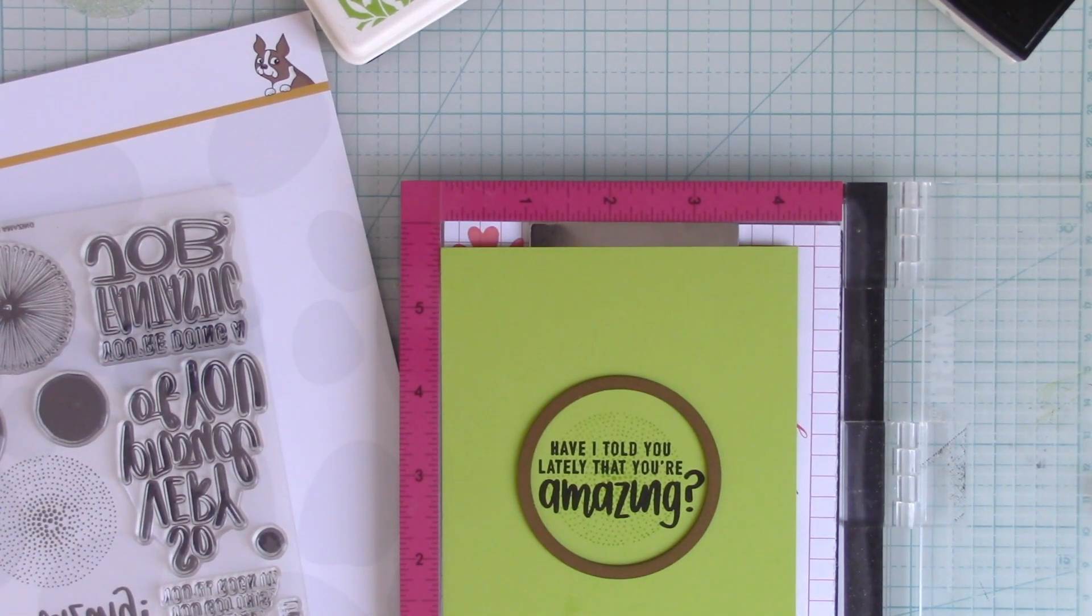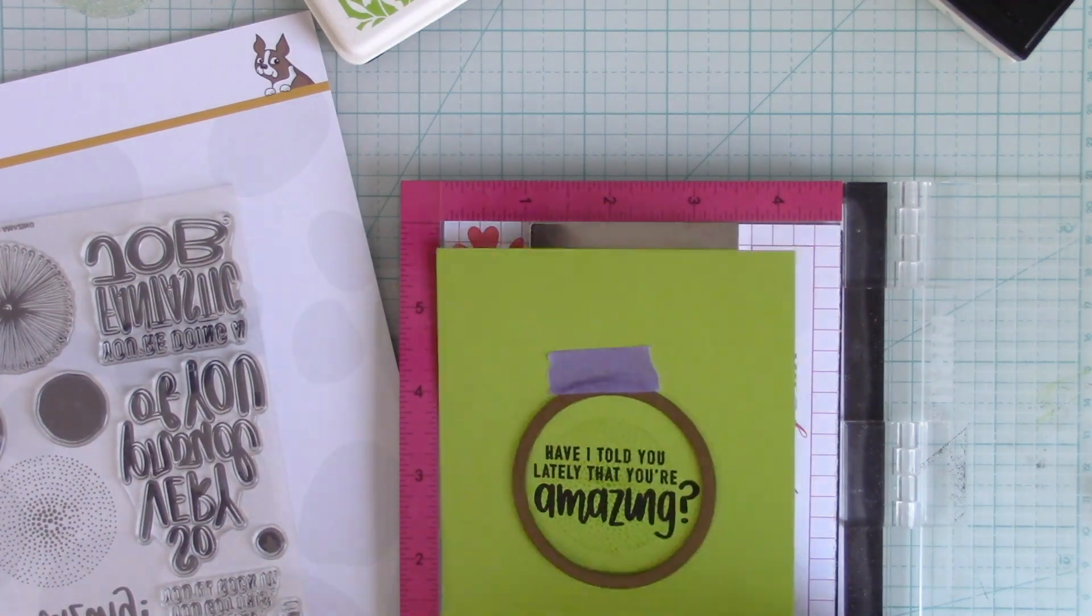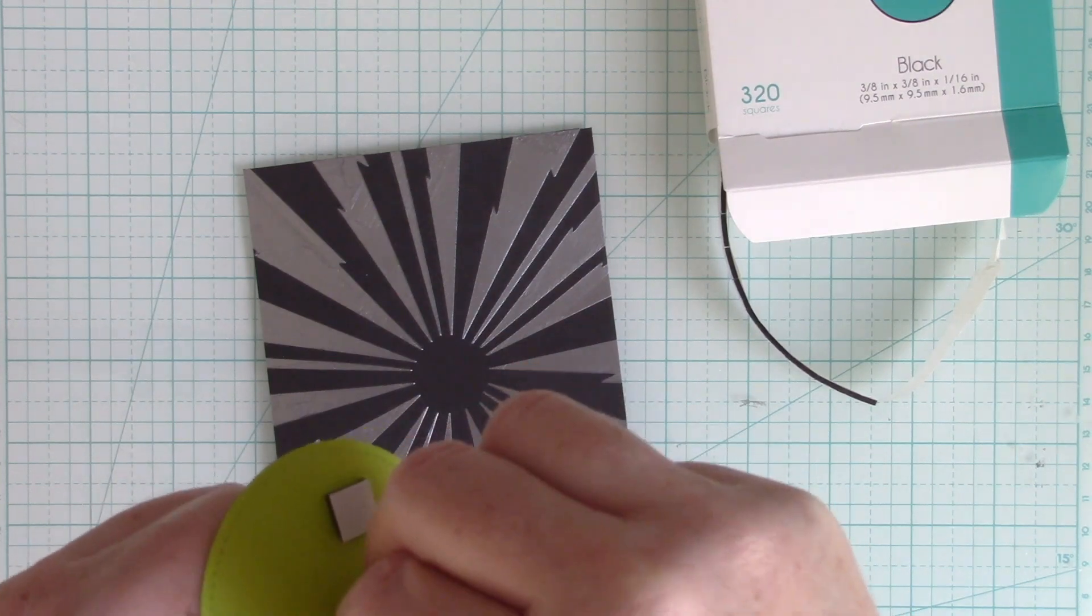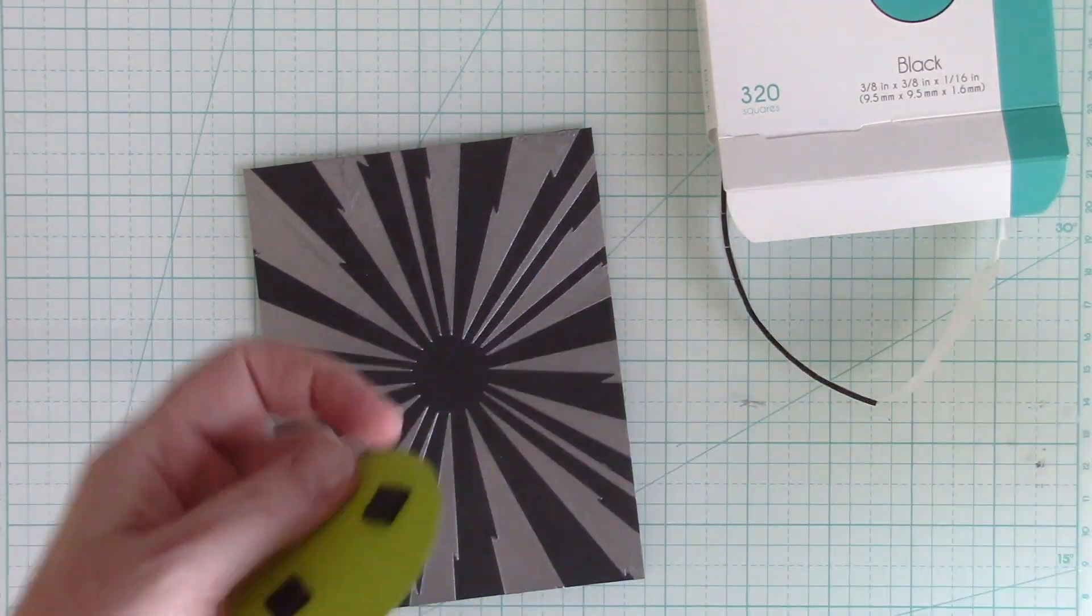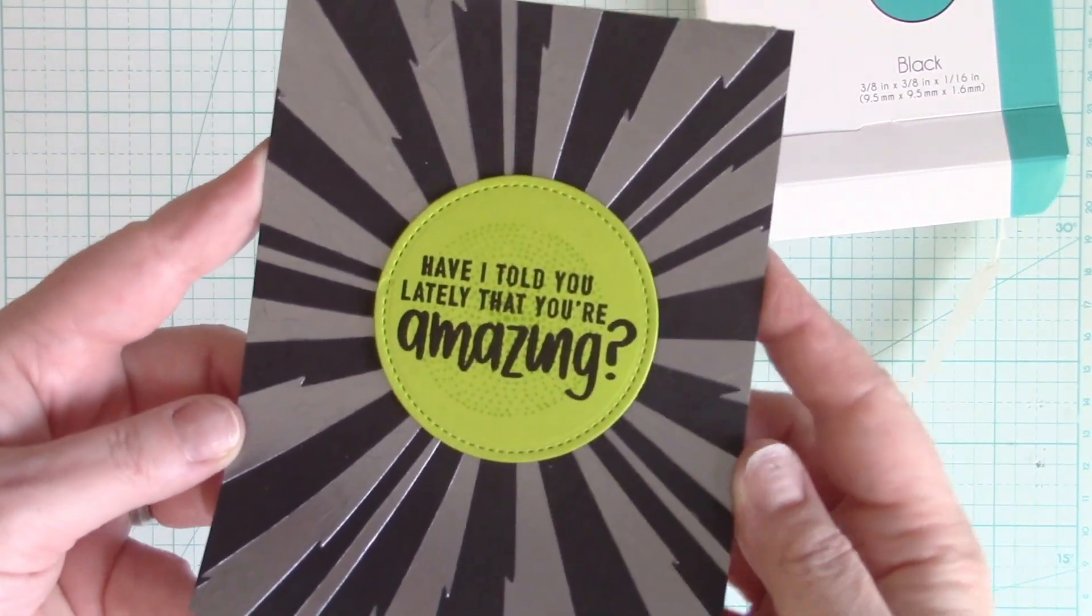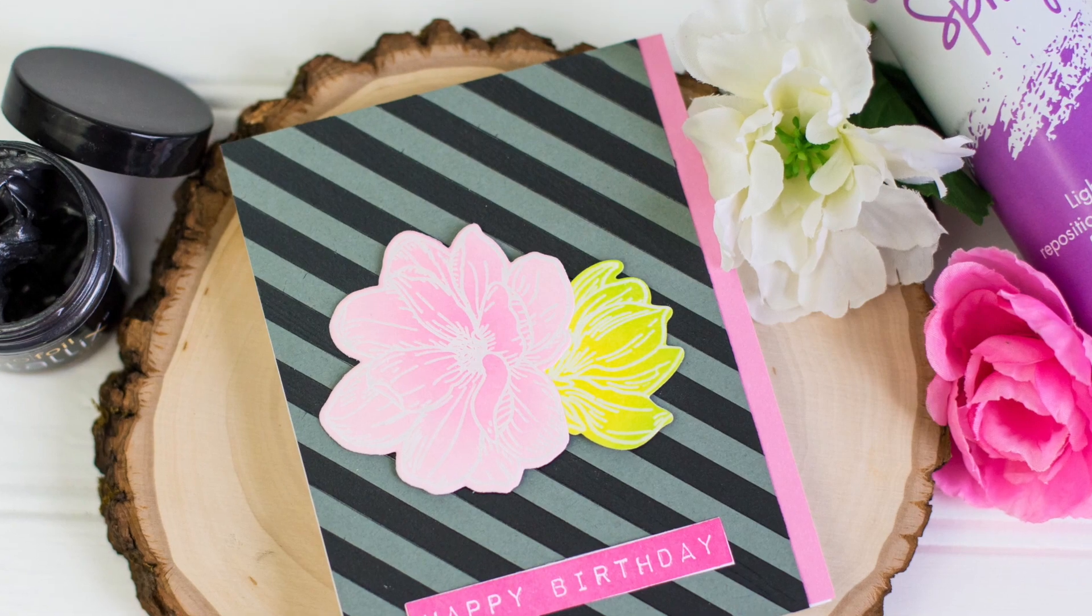I'm cutting the sentiment out with a ThermaWeb Gina K Designs stitched circle, and I'm just holding it in place with my purple tape. Then I'm going to use some of the black foam tape to pop this circle up right in the center of that Zap Attack. And that's it. This card is done. I think that background design looks great for a masculine card.